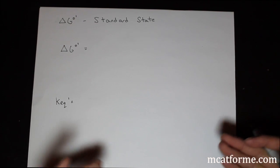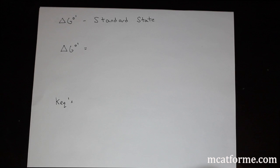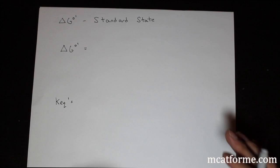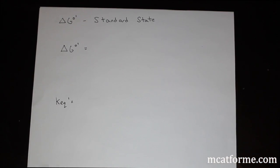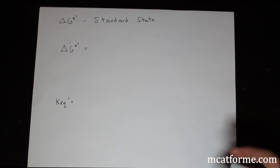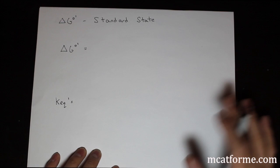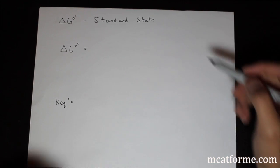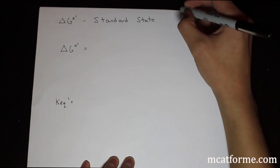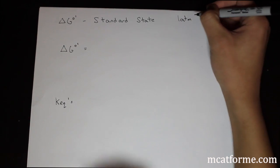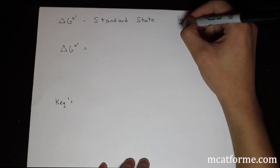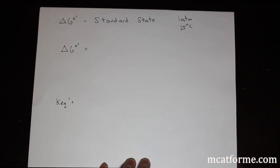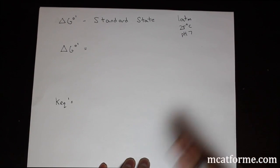So ΔG = ΔH - TΔS tells us the change in energy in a given reaction. However, delta G depends on the actual concentration of molecules at a certain time, so we can't measure it easily. Instead, we use ΔG°' — delta G naught prime — which is measured at standard state: one atmosphere of pressure, 25 degrees Celsius (room temperature), and a pH of 7.